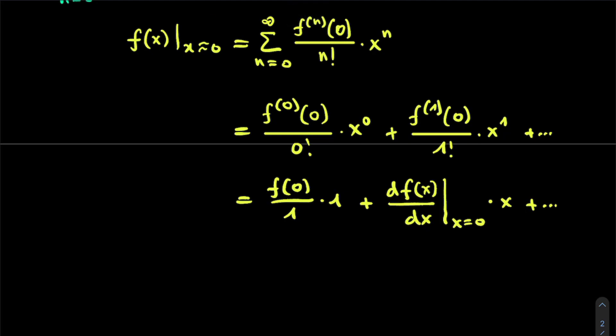So we see that taking the Taylor expansion of a specific function around x is equal to 0 basically boils down to taking derivatives of this function, and then simply filling in x is equal to 0. Doing this for the first, the second, and the third derivative, and so on until you've reached the appropriate accuracy.